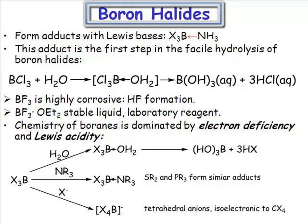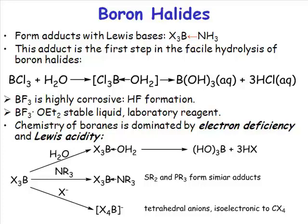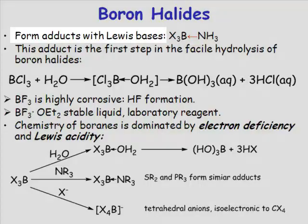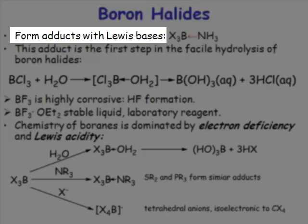Boron halides are definitive Lewis acids. The first chemistry you should always expect when doing chemistry with a boron halide is that it will function as a Lewis acid. So if you're asked for a chemical reaction between a boron halide and a second species, first look at that second species — is it a Lewis base? If the second species is a Lewis base, then the first interaction is always going to be donation of that lone pair of electrons into the vacant orbital on boron, forming a Lewis acid-Lewis base adduct.